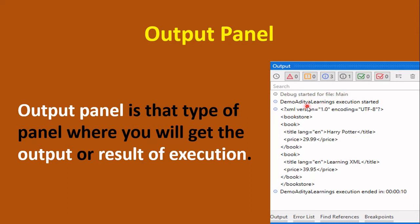We can also see the starting of the main file and when the execution is started. If there are any write line or log field activities that you put in between to see the result of a particular activity or sequence in the workflow, you can see those values in the output panel. This is all about the output panel — it displays the execution results of the process.